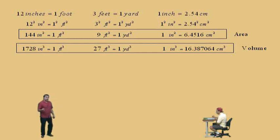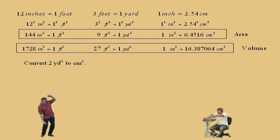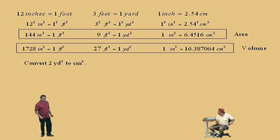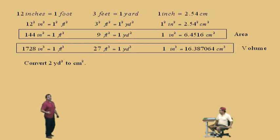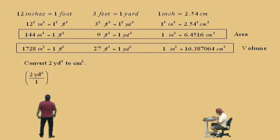We're going to convert 2 yards squared to centimeters squared. Now, how big is a yard squared? That's pretty big, right? But you have 2 of those. How big is a centimeter squared? Yeah, it's about that big right there. So again, we're going to get a lot of centimeters squared for our answer. We first start with a ratio: 2 yards squared over 1. You need to have a ratio to do these conversion problems.